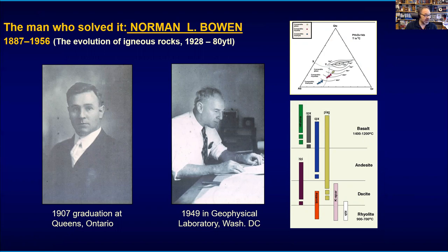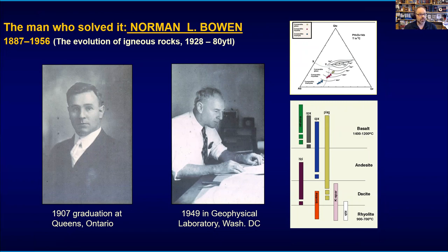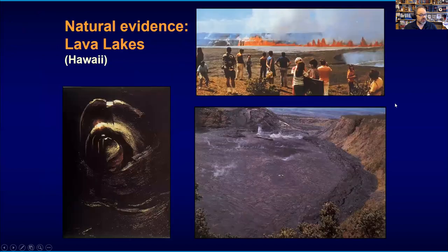Bowen was a Canadian who worked in the US for much of his working life, at the geophysical laboratory in Washington. He did experiments with hot magma liquids and came up with this sequence, realizing there is a change in the composition of the liquids depending on the crystals that are forming — a painstaking, meticulous type of work. He had to do many experiments at different stages — in the hot state, the intermediate state, the evolved state — and at different pressures. He then summarized this in what we nowadays know as phase diagrams.